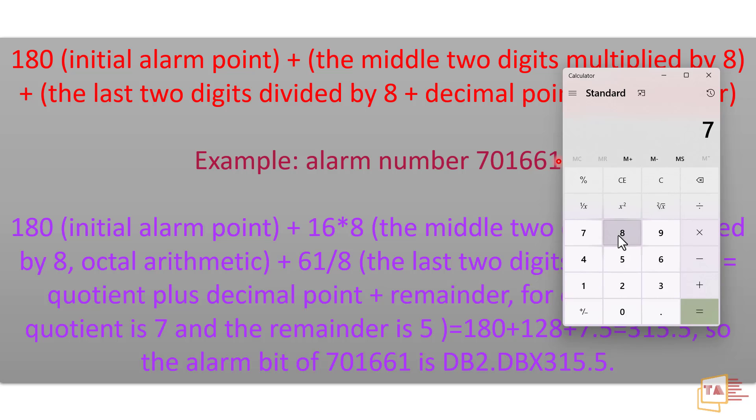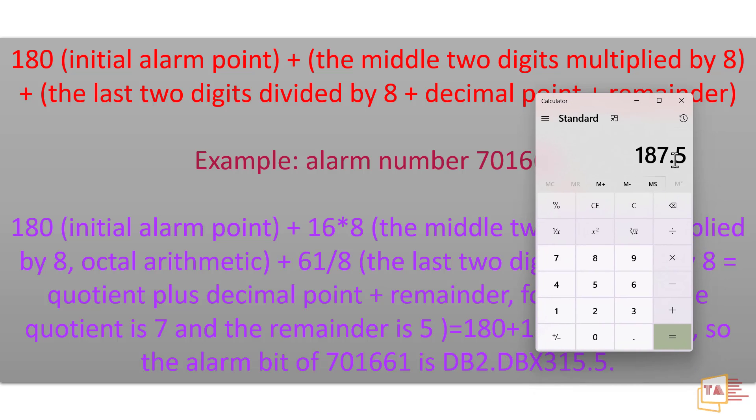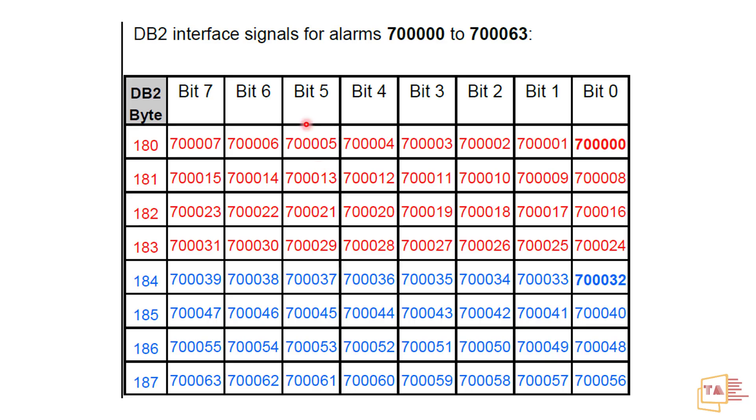So I'm just adding 180 plus 7: 187.5, because the remainder is 5. So 187.5 is the exact DB address: DB2.DBX187.5. Let me check this one: 187.5. Wow, we got the exact alarm address.